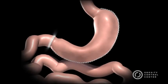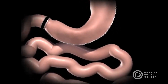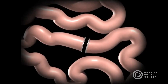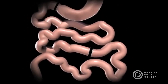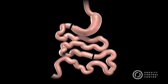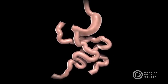The duodenum, or the first portion of the small intestine, is divided just past the outlet of the stomach. A segment of the distal, or last portion of the small intestine, is then brought up and connected to the outlet of the newly created stomach, so that when the patient eats, the food goes through a newly created tubular stomach pouch that empties directly into the last segment of the small intestine.